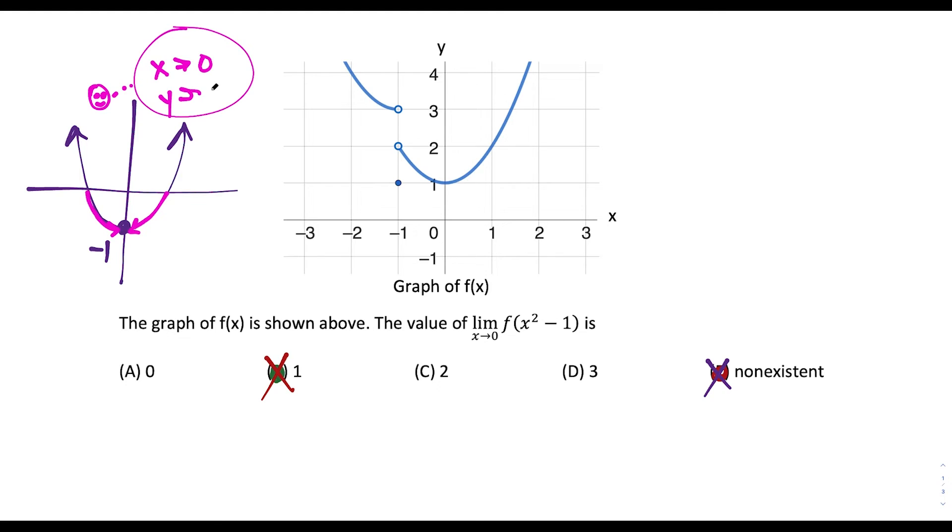As x approaches 0, our y value is approaching negative 1, but it's approaching negative 1 from above at values that are greater than negative 1. So we are approaching negative 1 from the right side. So then what this tells us,